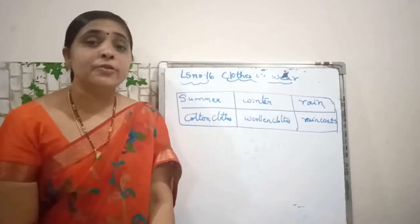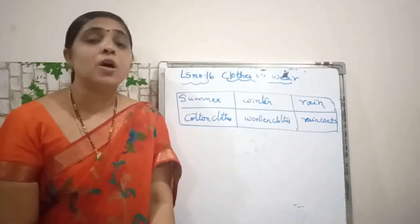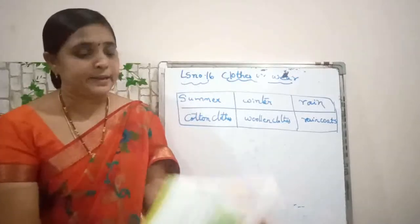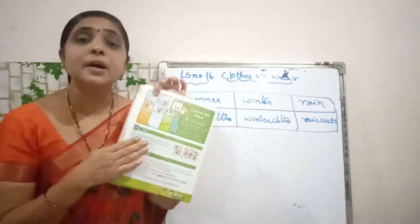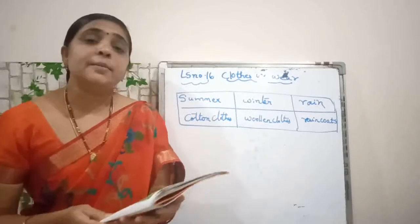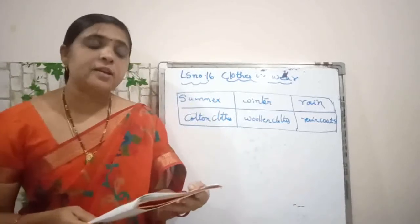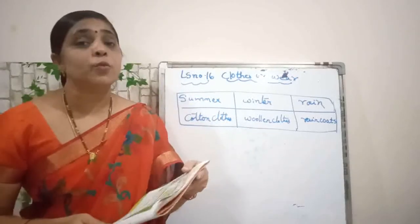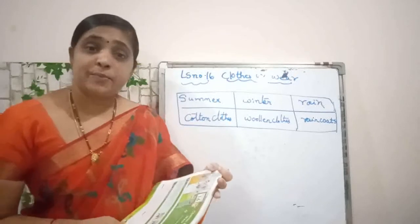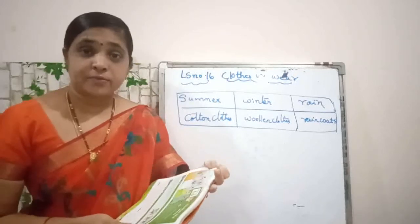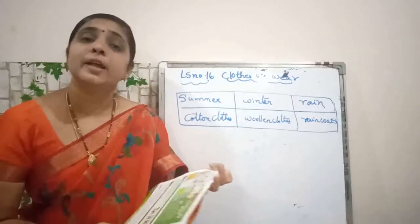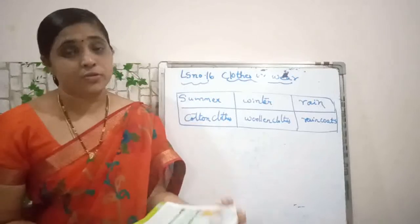So all of you take out your EBS textbook, page number 30. Lesson number 16: Clothes We Wear. You all know there are different types of clothes. In different types of seasons, we will wear different types of clothes.